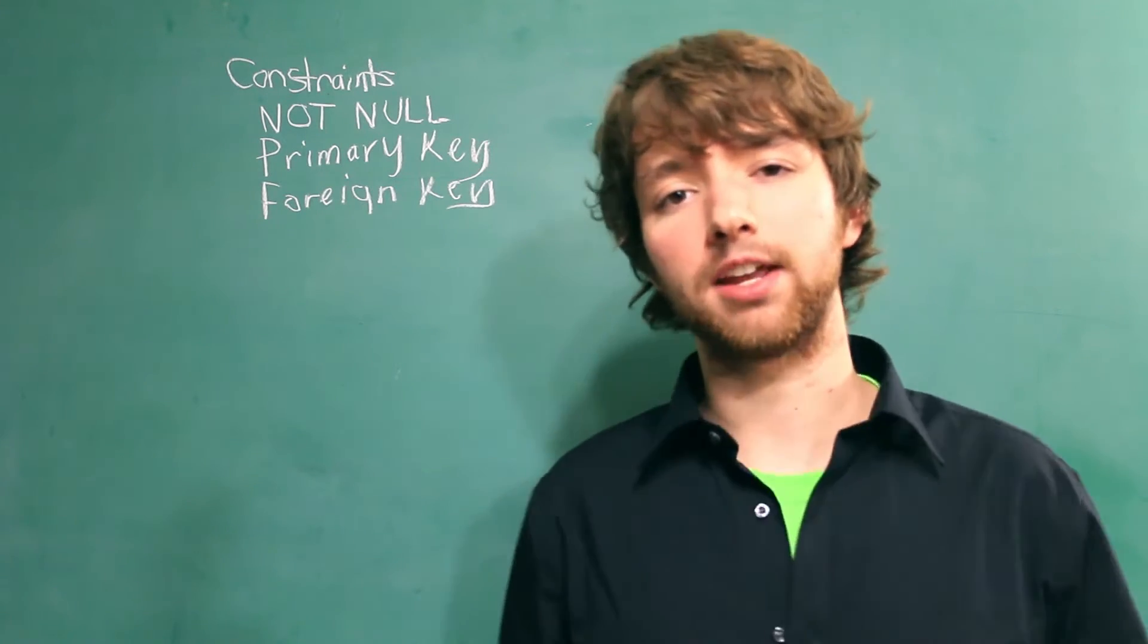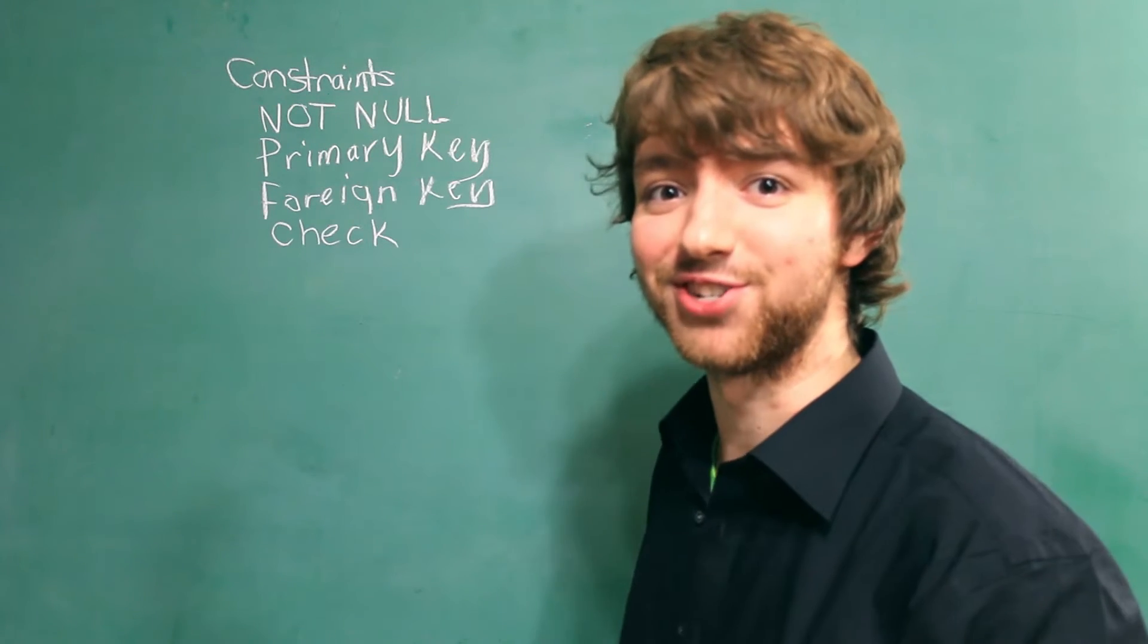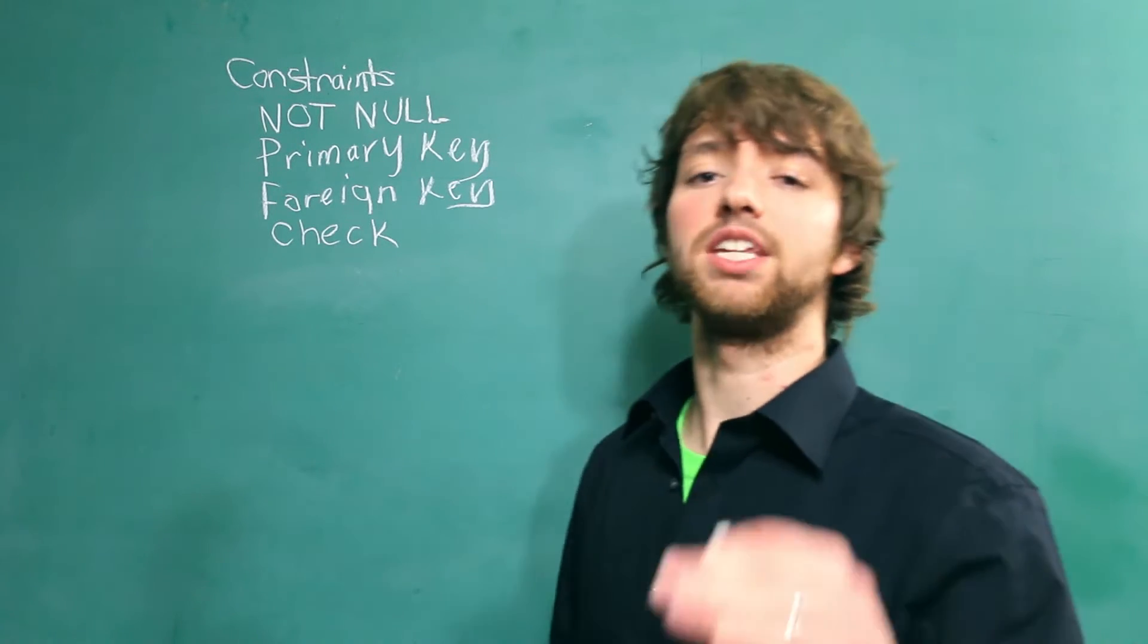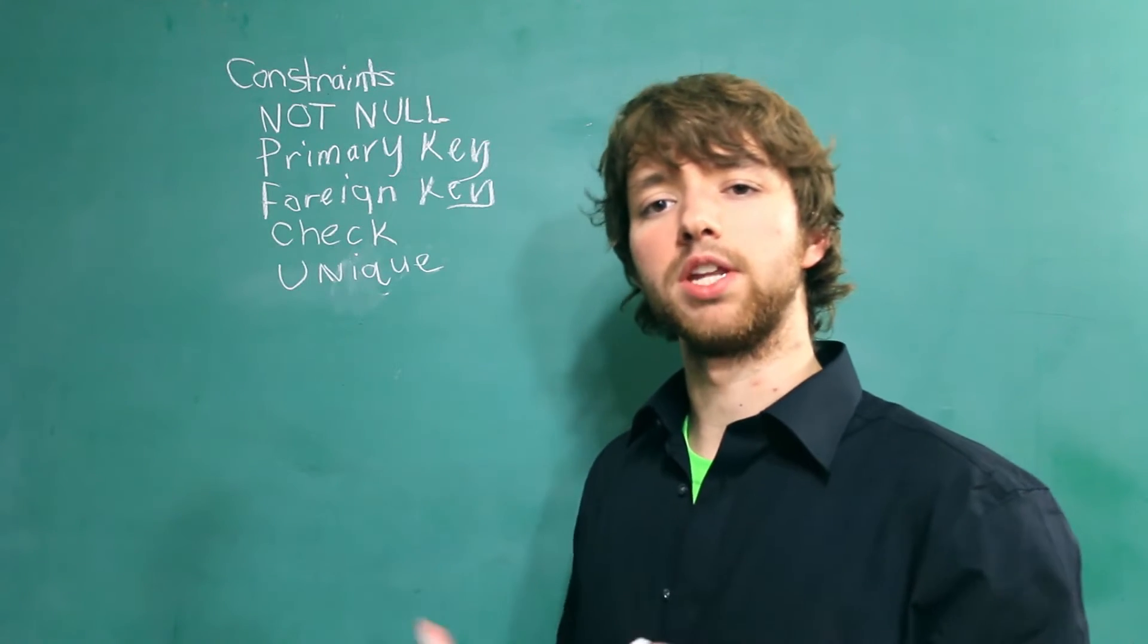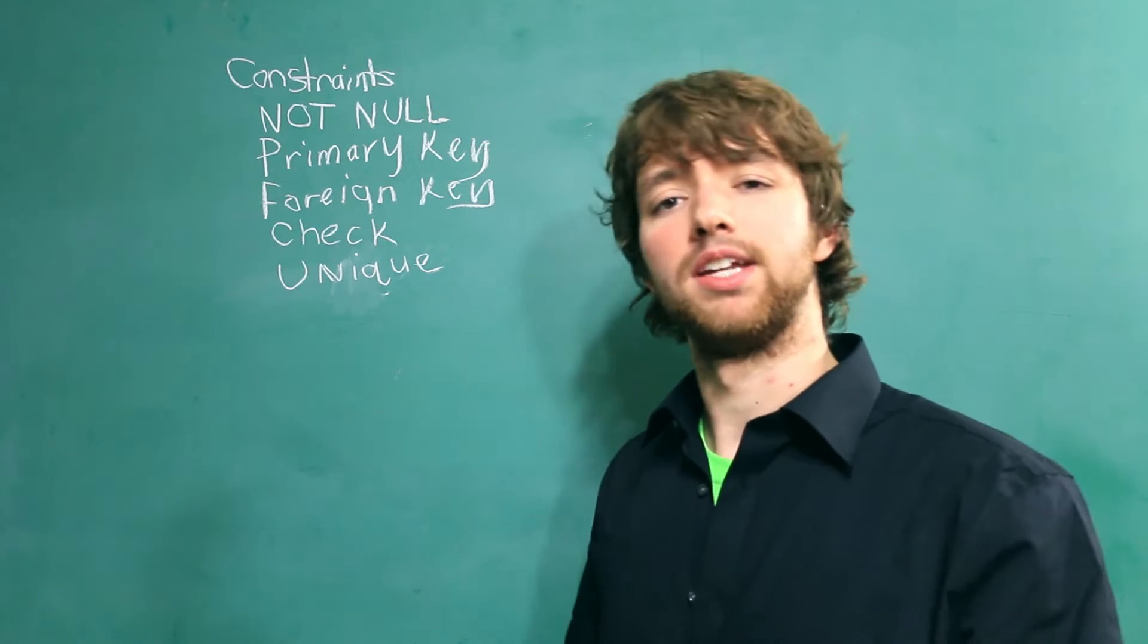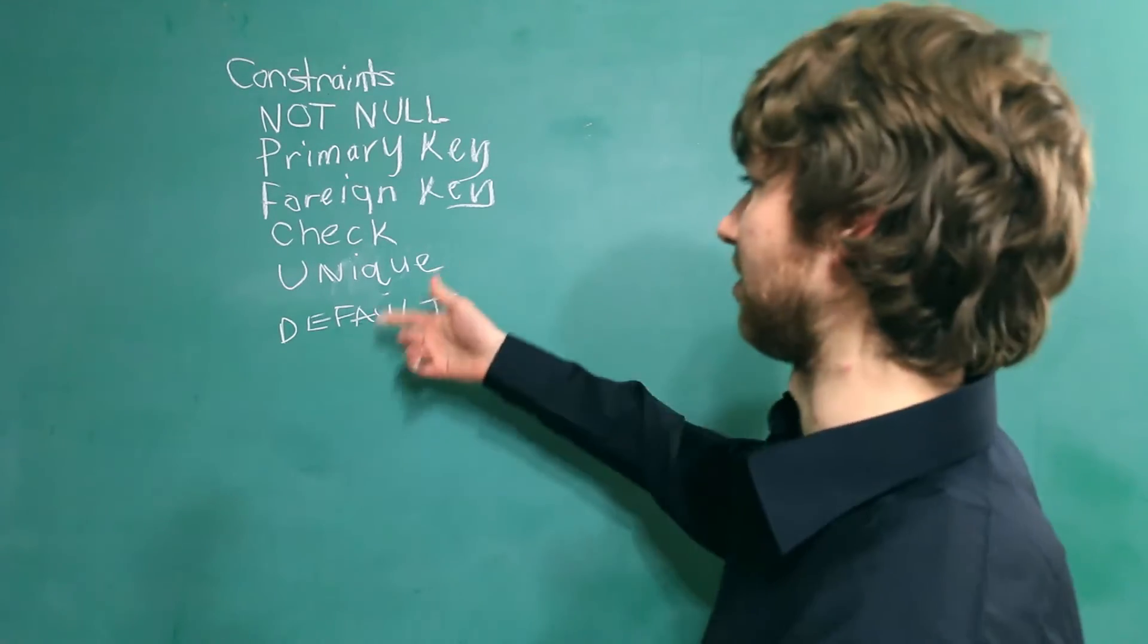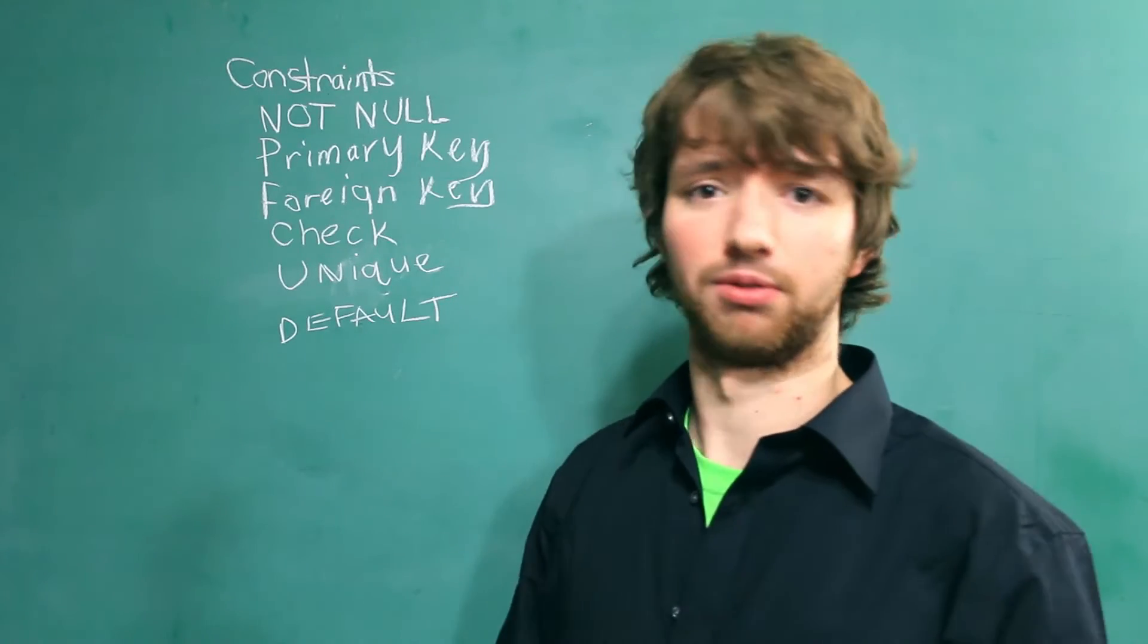The next constraint is called a check constraint. And if you ever heard of this one, you should really check it out. There is another one we're going to talk about. And that's the unique constraint. Now another keyword you're going to run into. And I don't think this is technically a constraint. But I'm going to write it anyways. It's default. Now all of these should be in uppercase. But I didn't realize I was writing them in lowercase until I was already like here. And by then, it was too much to have to rewrite.